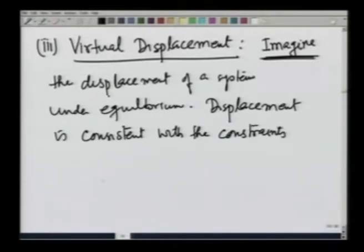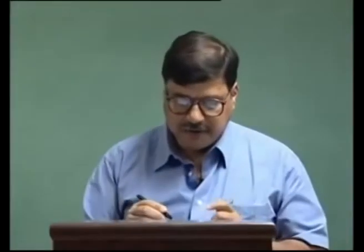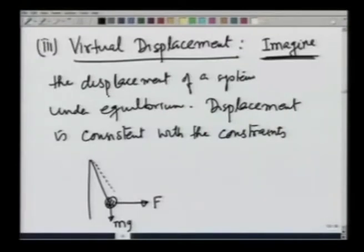What you are imagining is: suppose there is a body which is in equilibrium. Let us take an example. If I take the pendulum, and suppose I apply a force this way — F, its own weight mg — and it is in equilibrium. Imagine, just imagine, that I displace it slightly. This is the only way I can displace the pendulum, because this is the only degree of freedom allowed; that is, I can change only theta.